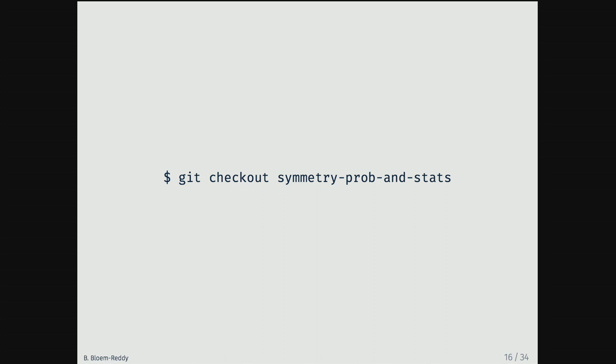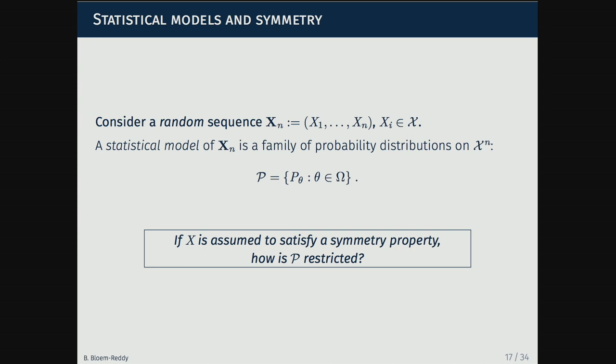Now I'll jump over to the probability and statistics branch. That was a quick overview of the literature for some of these symmetries over the past three years. Now I'll talk about it in different language — more comfortable for me and probably less comfortable for some of you, but we'll see if we can come together. The idea is to treat these as random variables.